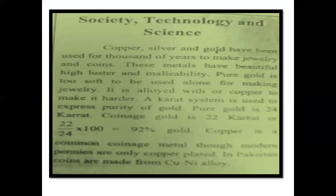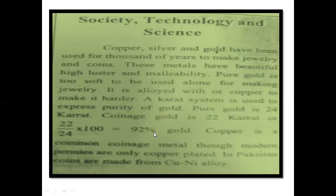24 karat gold is pure but very soft, so 22 karat gold is commonly used. The percentage of gold in 22 karat is calculated as (22/24) × 100 = 92%, meaning 22 karat gold contains 92% gold and 8% copper. Copper is a common coinage metal, and in Pakistan, coins are nowadays made from copper-nickel alloy.